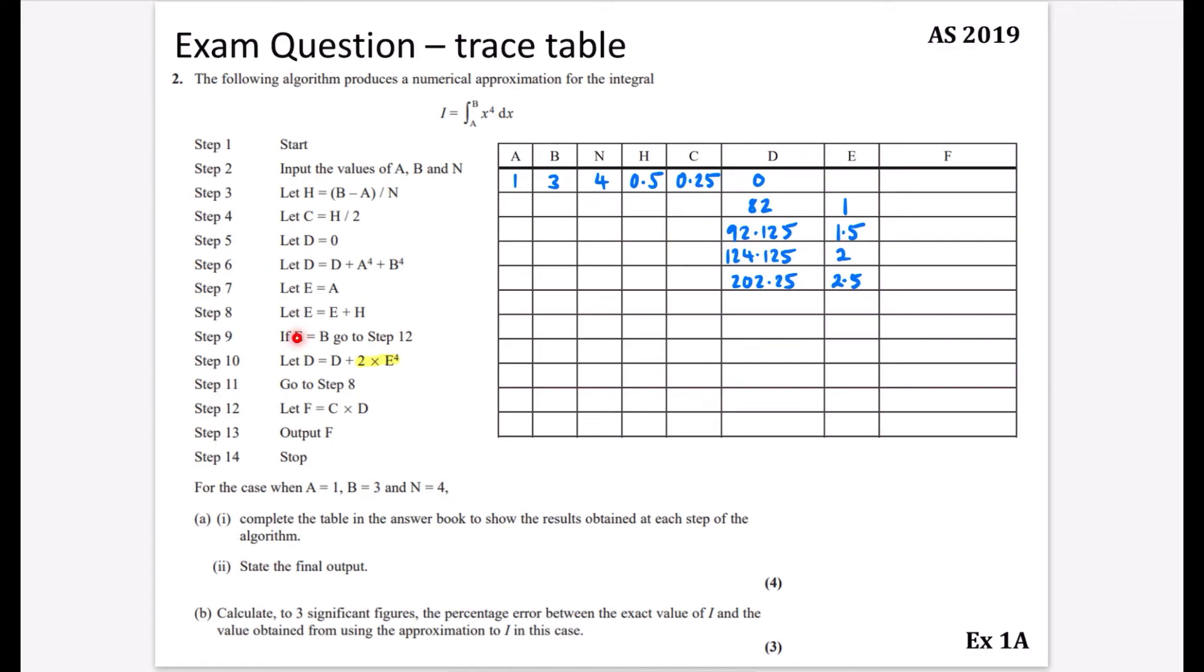We go to step 8 again. Increase e by h, so it becomes 3. If e equals b, go to step 12. It is equal to b, so we go to step 12: f equals c times d. Multiply those together to get f, which is 50.5625. We've completed the table, and the final output is 50.5625.